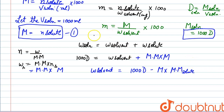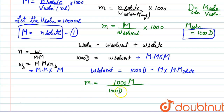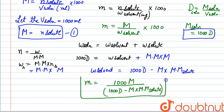Now we substitute this weight of solvent into the molality formula. Small m equals 1000 times capital M, divided by (1000d minus MM of solute times M). This is the final relation between molality, molarity, and density. Thank you so much.